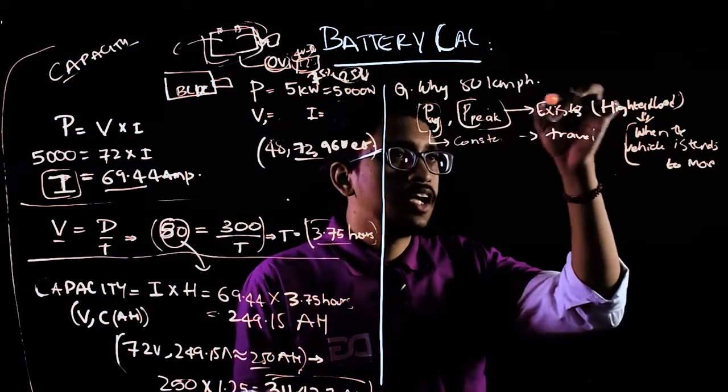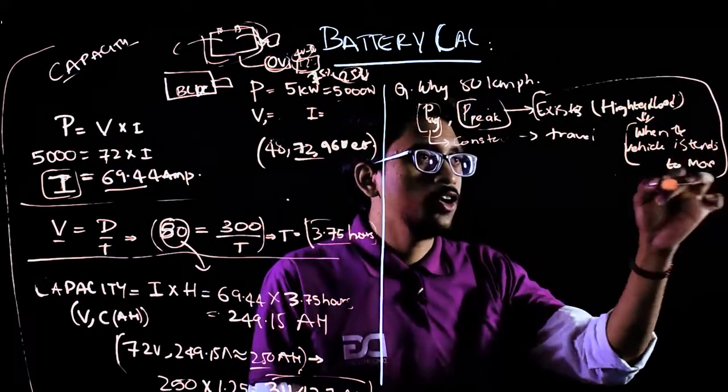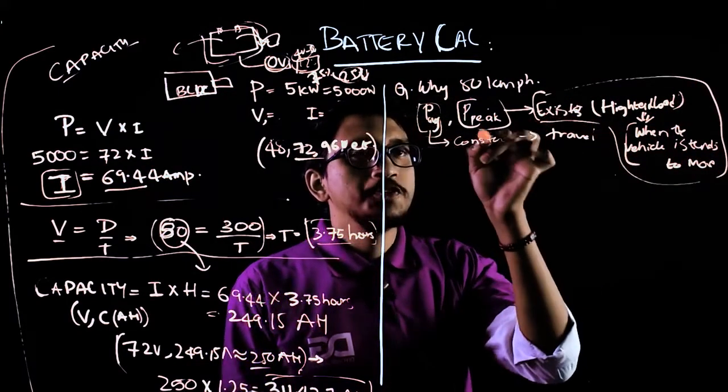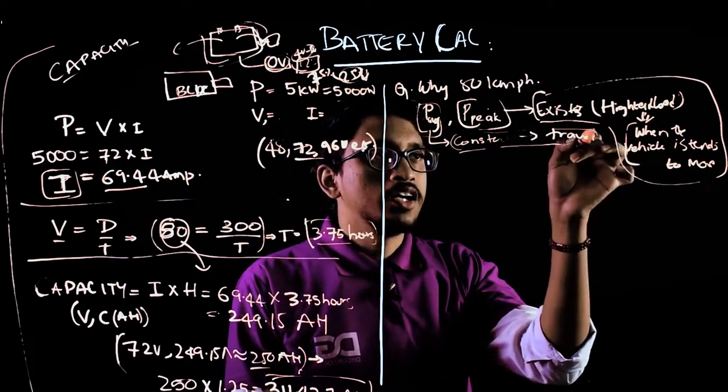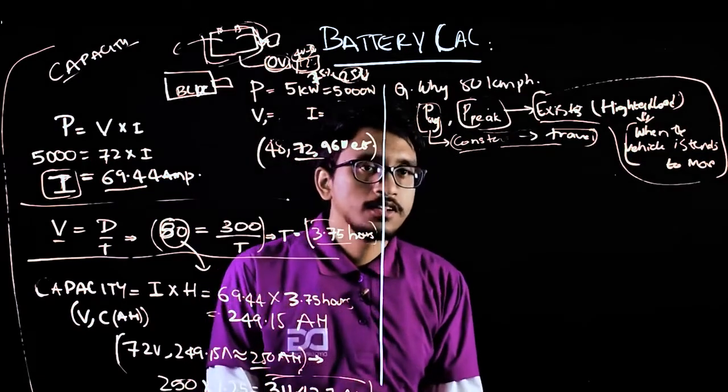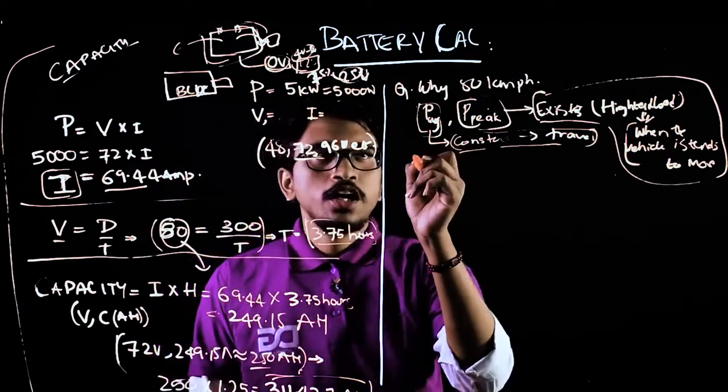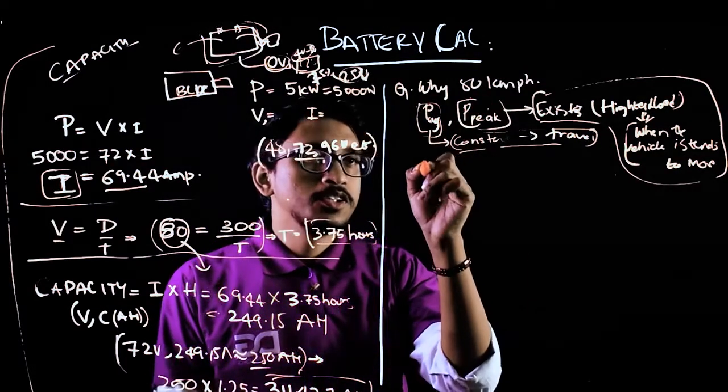The average power is going to be constant and is going through the travel. Why 80 kmph? Because my vehicle's maximum speed is 180 kmph.